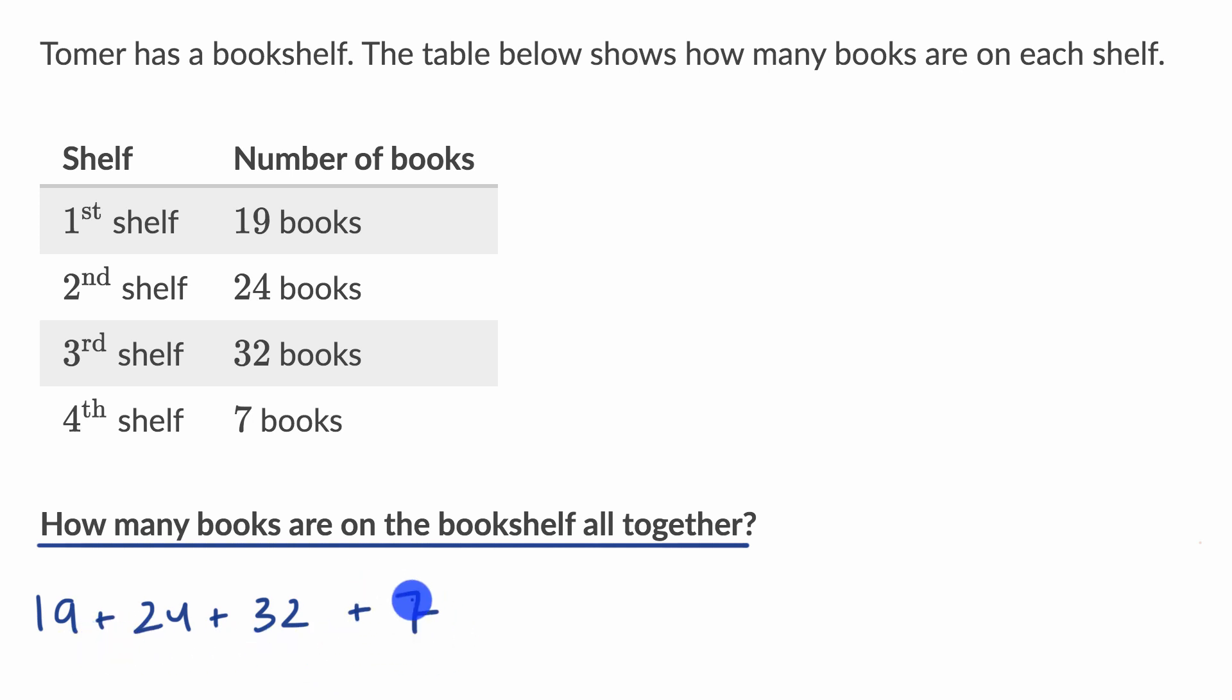Now, how can we do that? Well, I like to do that by separating out the tens place from the ones place. For example, I could rewrite 19 as 10 plus nine. I have one 10 and nine ones. I could rewrite 24 as 20 plus four. So plus 20 plus four. I could rewrite 32 as 30 plus two.